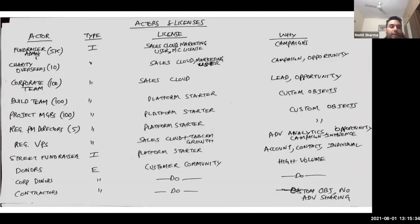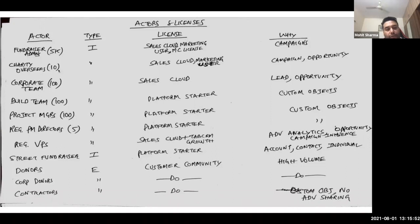Moving on to Actors and Licenses. Fundraiser admin is an internal user — license recommendation is Sales Cloud, and the marketing user flag will be enabled on their user record so they have access to Marketing Cloud for running campaigns. Charity overseers are not involved in any business process, but they sit as a central team and would like to oversee all operations. I'm recommending Sales Cloud again with the marketing user flag so they can access campaigns as well as opportunities and Sales Cloud data.